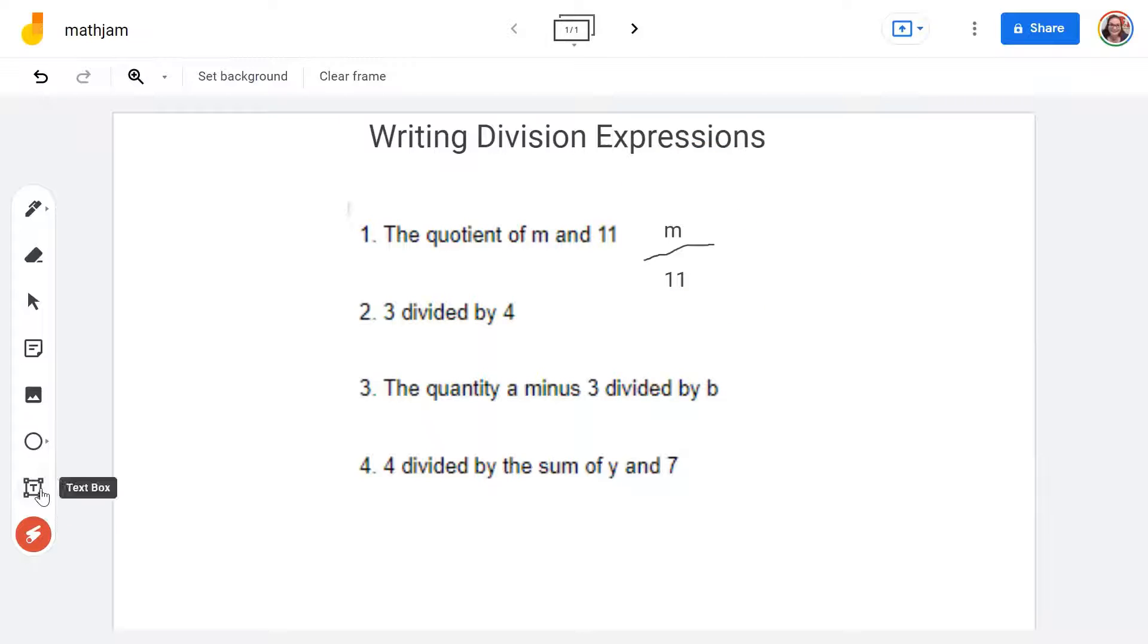All right, and so let's take a look at our second one here. This one is three divided by four. And so just like we did before, we're not going to use the division symbol. We're actually going to use the line that we typically see when we are writing a fraction. So three divided by four, put our three on top and our four on the bottom.